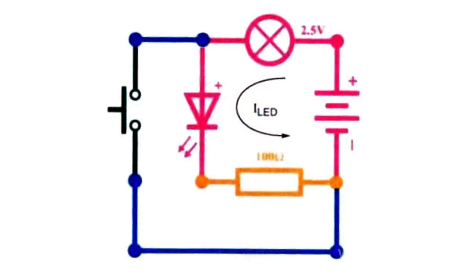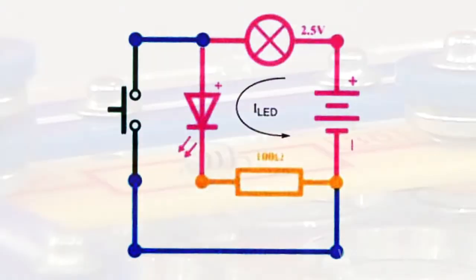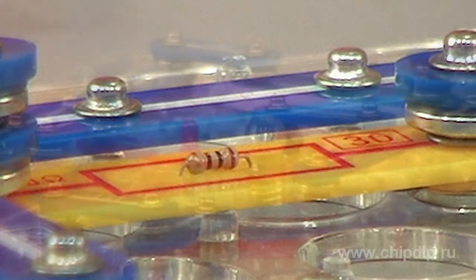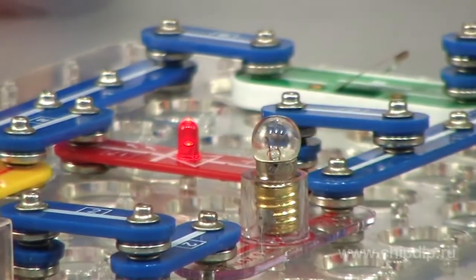Let me assure you with a simple example. To this end, let's assemble the circuit as shown in the figure. The resistor is the last thing to install.